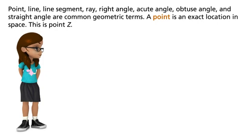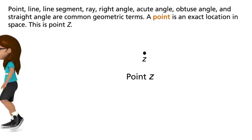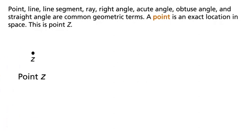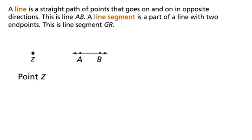A point is an exact location in space. This is point Z. A line is a straight path of points that goes on and on in opposite directions. This is line AB.